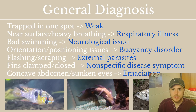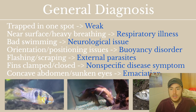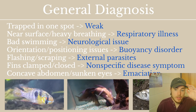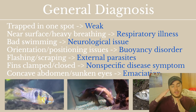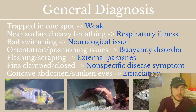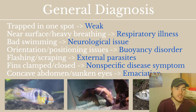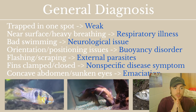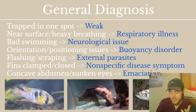If they have orientation or positioning issues — if they're upside down or on their side — it's usually a buoyancy disorder. Fish use their swim bladder to keep themselves upright and balanced. If they're flashing or scraping, pushing themselves off the bottom as if itching, that's usually due to external parasites. If their fins are clamped or closed against their body, that's a non-specific disease symptom — very common but doesn't point to any specific disease. If a fish has a concave abdomen or sunken eyes, that's usually due to emaciation, a form of malnutrition where the body is not getting what it needs.